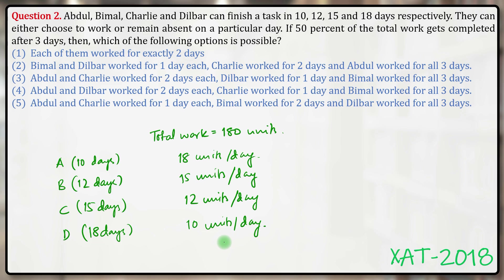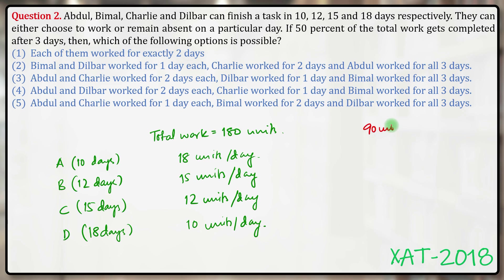Now, what is given: they can choose either to work or remain absent on a particular day. If 50% of the total work gets completed after 3 days — total work is 180 units, 50% of which is 90 units — the situation is such that after 3 days, 90 units of work was completed. Which of the following options are possible?